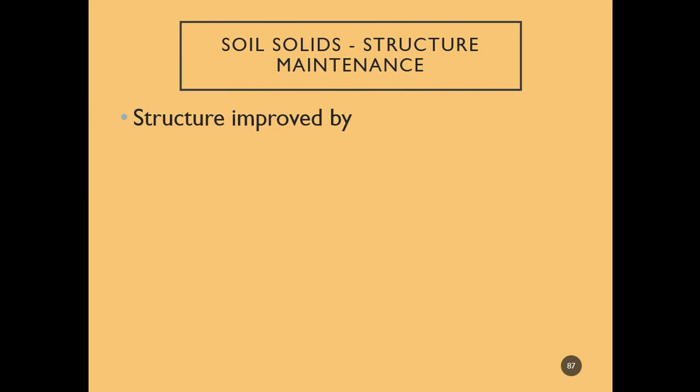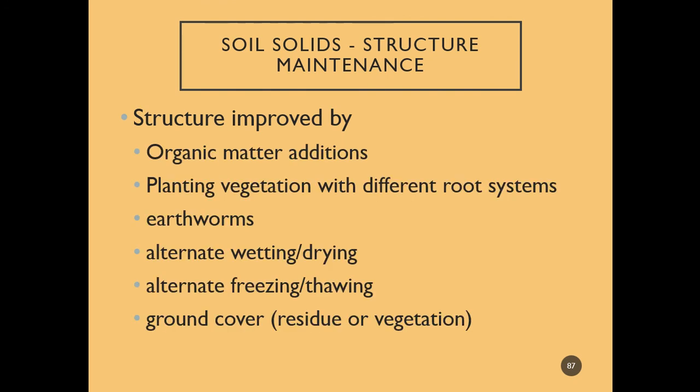Soil structure can be improved by adding organic matter, which helps glue aggregates together and increase microbial activity. Planted vegetation with different root systems at different depths contributes to root turnover, which increases organic matter. Earthworms, wetting and drying, freezing and thawing, and ground cover — whether crop residue left on a field after harvest, mulching, or vegetation in an urban setting — all help keep soil covered and structure intact.